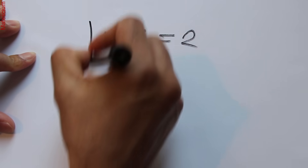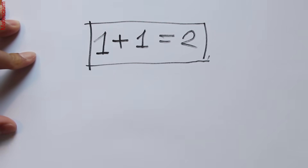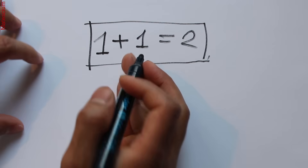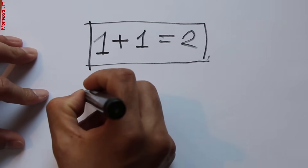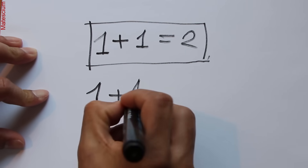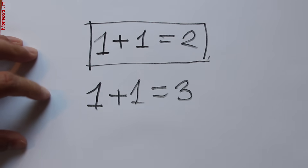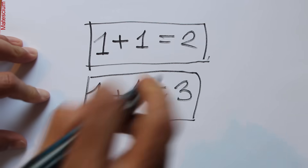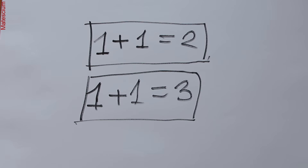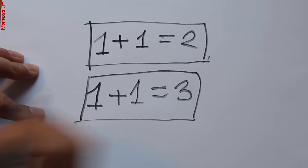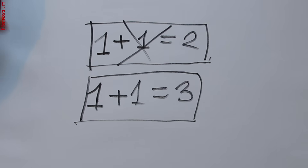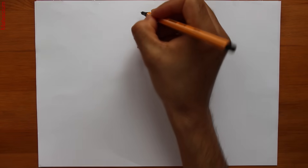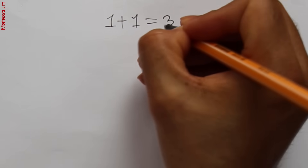We know that 1 plus 1 equals 2 according to mathematics, and we've known it from childhood. This is proven mathematically, but what if I say 1 plus 1 equals 3? Yes, I say 1 plus 1 equals 3 through a strange mathematical calculation, and I will prove it. I'm Robbie, an educator and filmmaker.